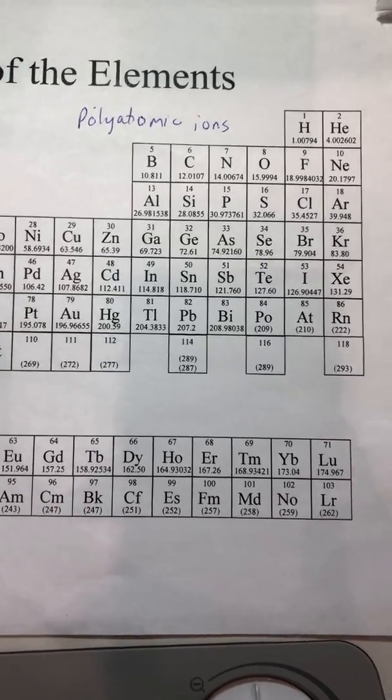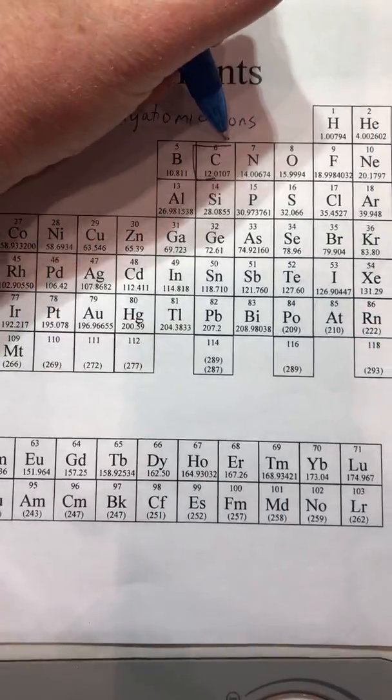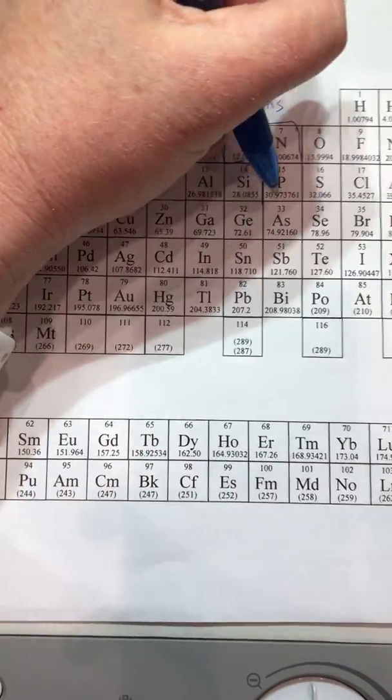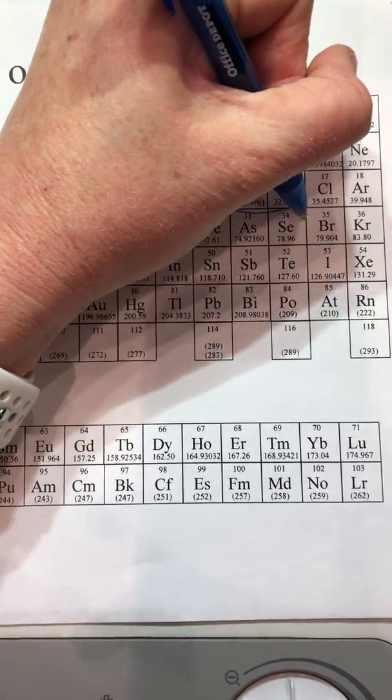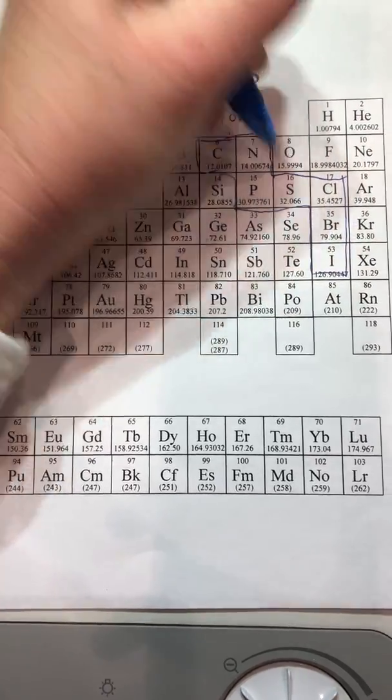The first thing we're going to notice is carbon. It's right here and then to the right of it is nitrogen. Underneath it is phosphorus. To the right of that is sulfur, chlorine, and then under that is bromine and iodine and we're just going to kind of form this little stair stepper